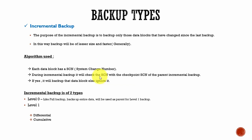How will Oracle perform this incremental backup? It has an algorithm. We know each data block in a data file has a system change number. During the incremental backup, it will check the current system change number with the checkpoint system change number of the parent incremental backup. If the system change number in the data block is greater than or equal to the checkpoint system change number of the parent, then the data block is copied, or else it will be ignored. Based on the system change number, it can easily figure out whether the data block has been changed from the previous backup.